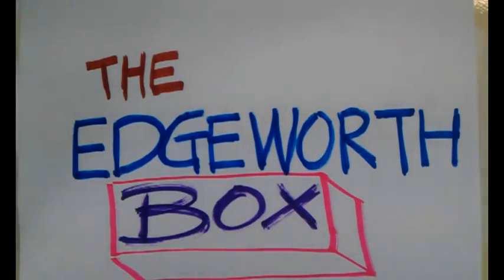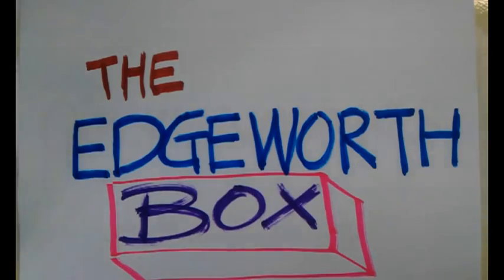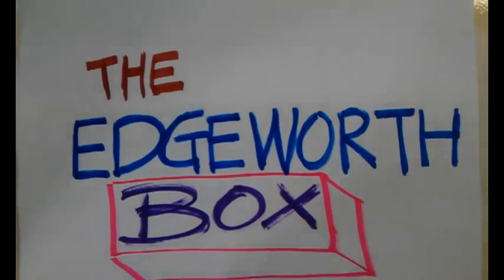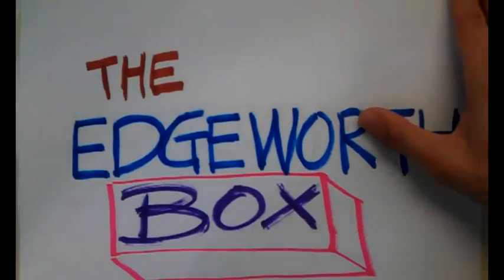Let's start the video on the H1BOX. The H1BOX is basically a tool to analyse resource distribution and how people can be better off through trade. This is going to be a bit similar to our first chapter in trade and specialisation, but this is more towards a general equilibrium point of view, whereby we analyse more than one or two individuals in a market with more than one good — assuming two goods.